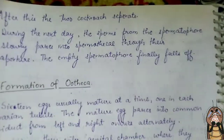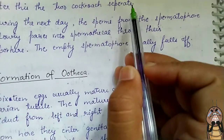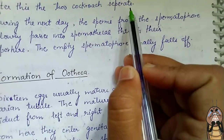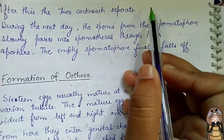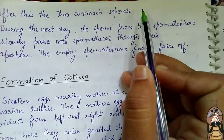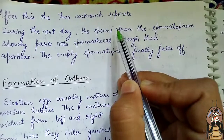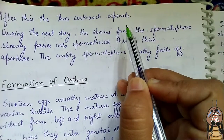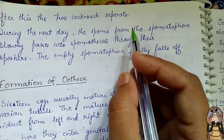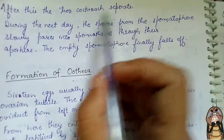After this, the two cockroaches separate. Once the spermatophore has been transferred onto the spermatical papillae and the phallic gland secretion has formed the outer wall of the spermatophore, the two cockroaches separate.